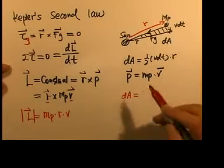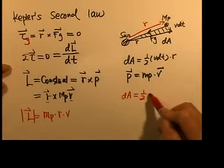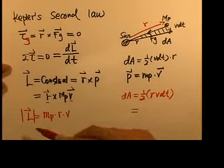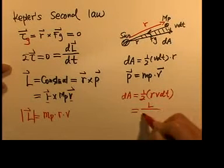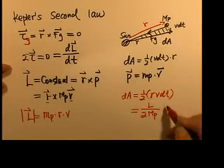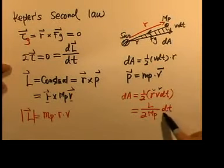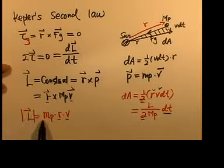We can express dA as one-half of r times v times dt. Replacing r times v with the magnitude of angular momentum divided by mass of planet, we get dA equals L over (2mp) times dt. So we've replaced r and v with L over mp.